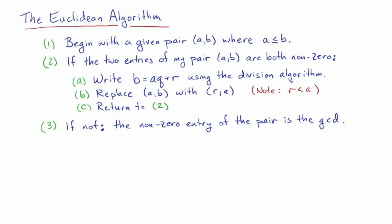Okay, so here's the usual not slow version of the Euclidean algorithm. It's classic version. We begin with a pair A and B, where A is the smaller. If the two entries are non-zero, then we write B as AQ plus R using the division algorithm. So some number of copies of A with a remainder of R. Then we replace AB with RA. So R is now the smaller one, so I'm going to stick it in the front. And then we loop back and we just keep repeating. And if at any point one of the entries of our pair is zero, then we're done. Ta-da.